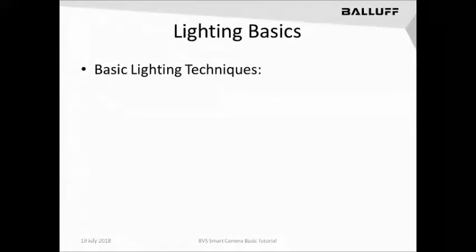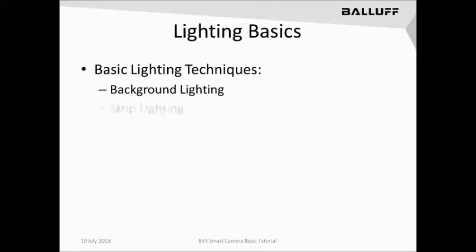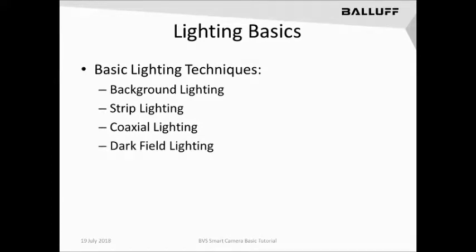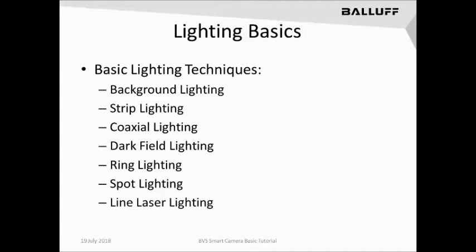Now let's discuss the basic lighting techniques that can be used to light an object or a part. We'll start with background lighting, sometimes known as backlighting. Then we'll discuss strip lighting, also known as bar lighting, a coaxial lighting source, a dark field lighting source, a ring lighting source, a spotlight, and finally line lasers as a light source.